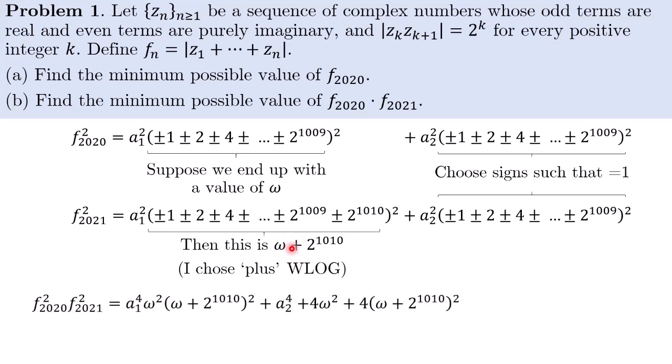And now if we compute the product, we can do it directly. We have the product of the two left terms being a1^4 omega squared (omega + 2^1010)^2. And the product of the right terms being a2^4.